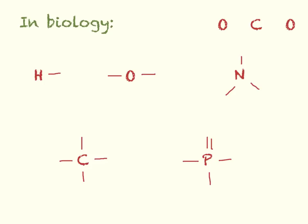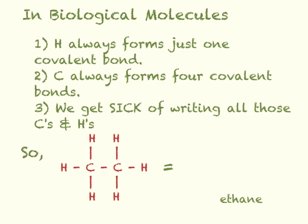They also make double and triple bonds. For example, in carbon dioxide up here we've got two double bonds. Let's count the number of bonds each oxygen makes — each oxygen makes two bonds, and the carbon has made four bonds. So they're still following the basic biological chemistry rules.